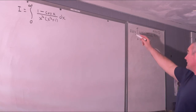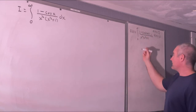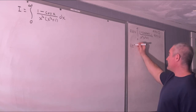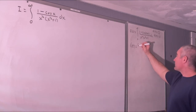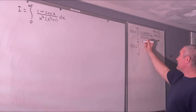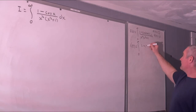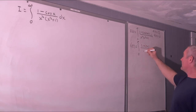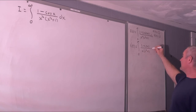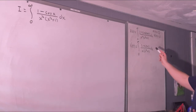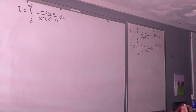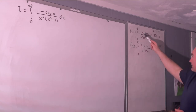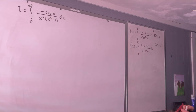Next step: take a derivative with respect to t using the Leibniz rule for differentiation under the integral sign. So f'(t) equals the integral from 0 to infinity of sin(tx)/x(x² + 1) dx. The derivative of cosine is negative sine, that part drops out, and we cancel one of the x's. We also note that f'(0) equals 0.